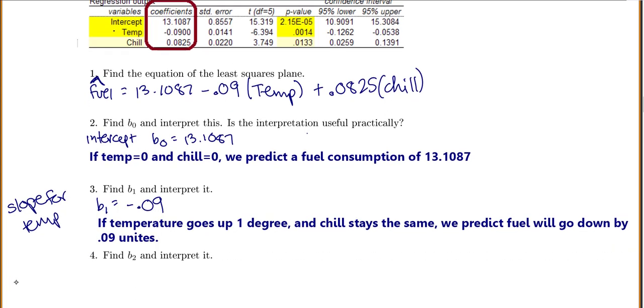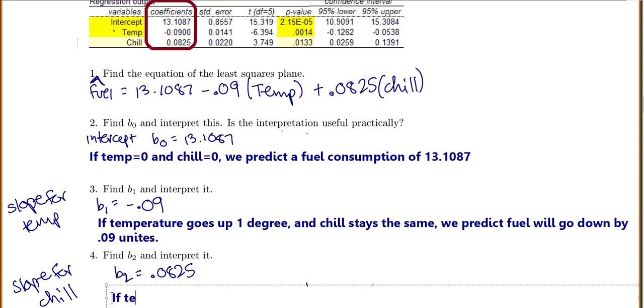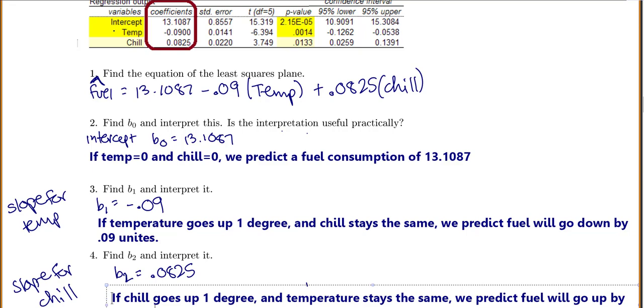For b2, this will be our slope for chill. And we'll say b2 equals this 0.0825. So this means if chill goes up one degree, and temperature stays the same, we predict fuel will go up by 0.0825 units.